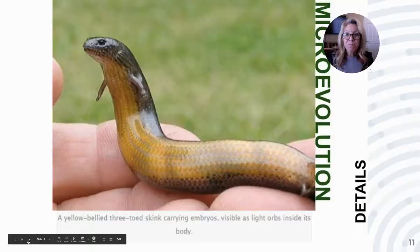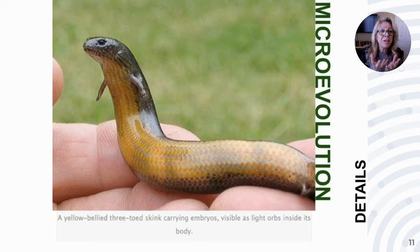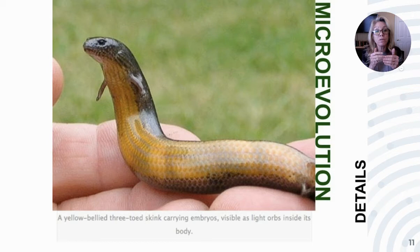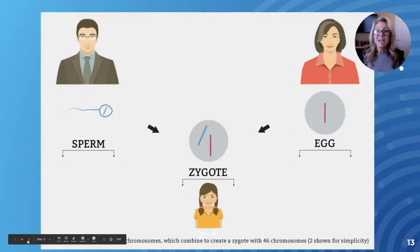Here's an example of microevolution: the yellow-bellied three-toed skink. Normally they would lay eggs, but this one lives in a colder climate, so it's been keeping its eggs within it and giving live birth. Currently, the ones that maintain the eggs and the ones that release them still interbreed, so this is microevolution. But if these skinks ever stopped mating with those that don't carry embryos, you would have speciation because they're no longer an interbreeding population.